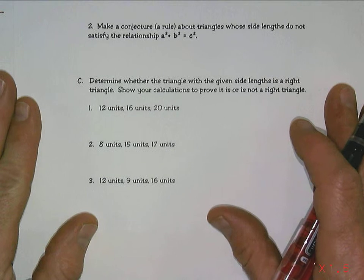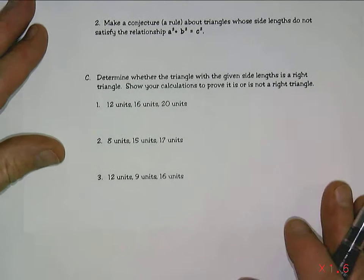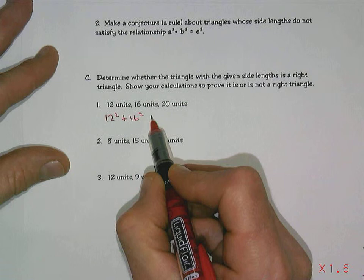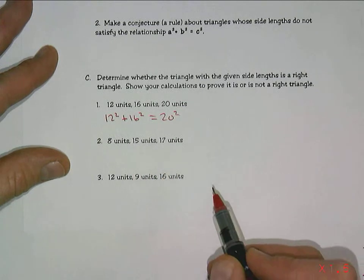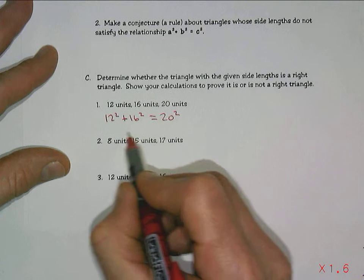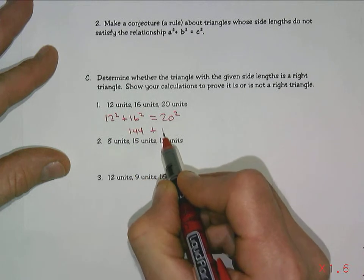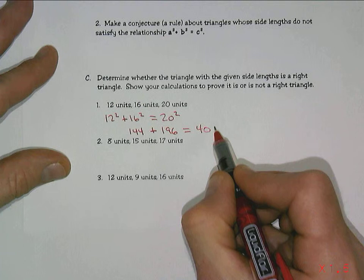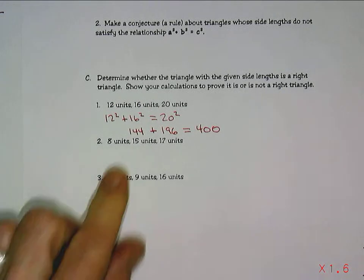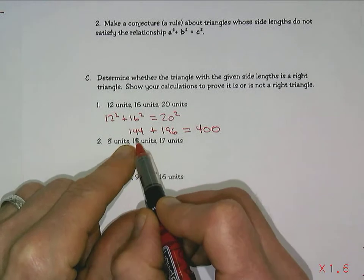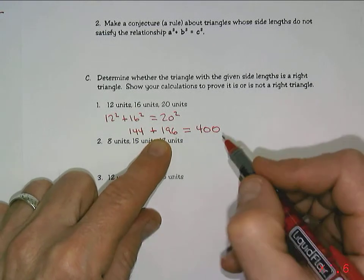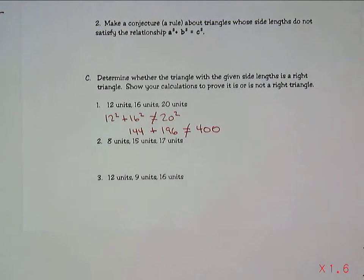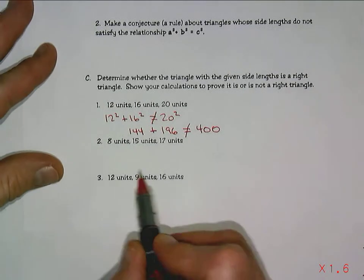A couple more here that we can try out. What 12 squared plus 16 squared, does that equal 20 squared? I have to know what some of these are. 12 squared is 144, and 16 squared is 196, and the question is, does that equal 400, which is what 20 squared is. I think you can see, even without calculating this out, you'd have about 340 between these two, and that does not equal 400, so these would not make a right triangle.